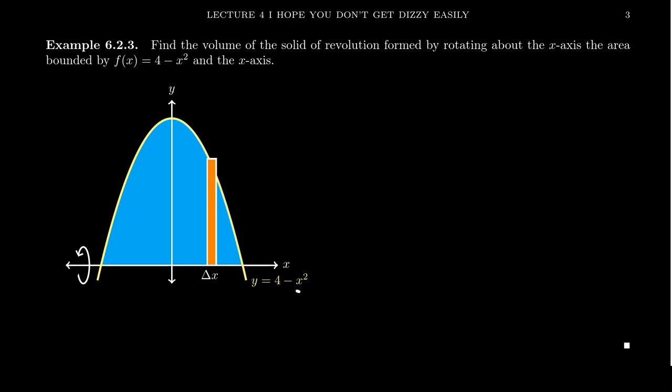You take your standard parabola, but it's going to be reflected downward and then you shift it up by 4, which you see right here. Now, in this situation, you'll notice that if we're going to try to find the volume using the disk method,